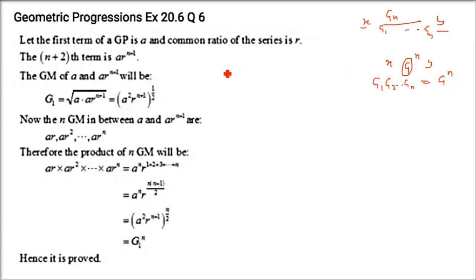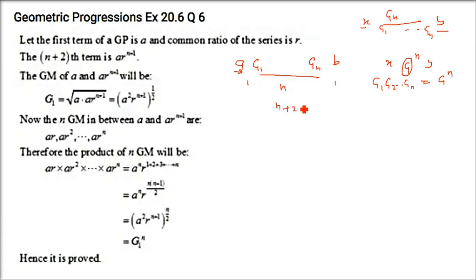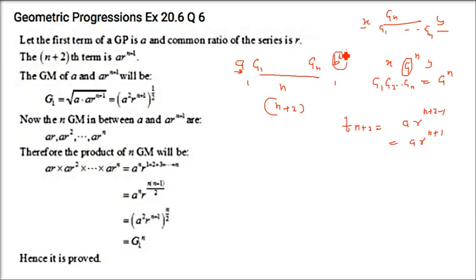Let a be the first term, r the common ratio, and b the last term. With G1 to Gn as n terms plus a and b, there are n+2 terms total. The last term is T(n+2) = a·r^(n+1), so b = a·r^(n+1).